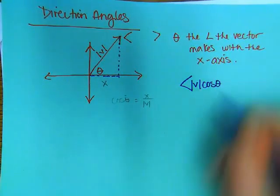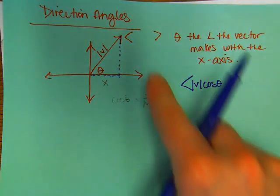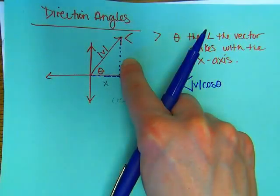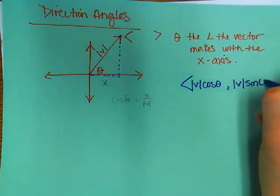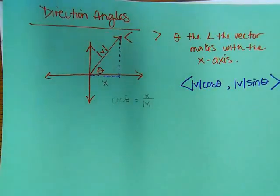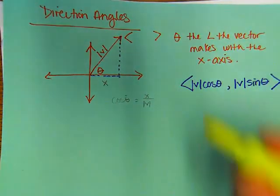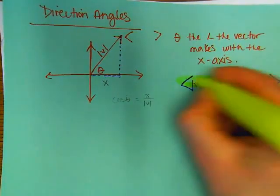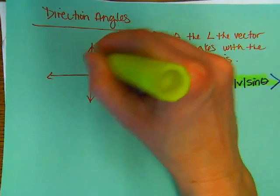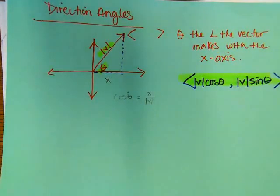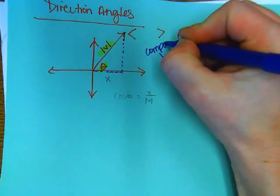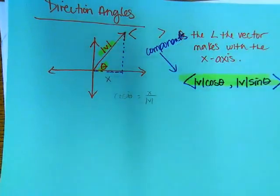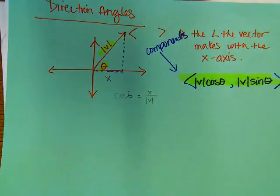All right. How do you find something's component form when you have this information? You take the magnitude of the vector, and you multiply by the cosine of the angle. To find the vertical one, you're going to use sine. So, the magnitude of the vector times sine of the angle. And so, I want you to understand then, if you have v and theta, this is how you get its component form.